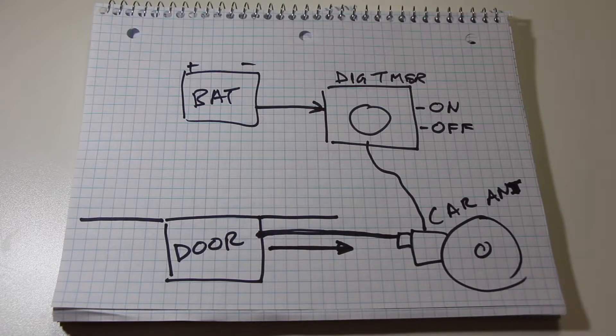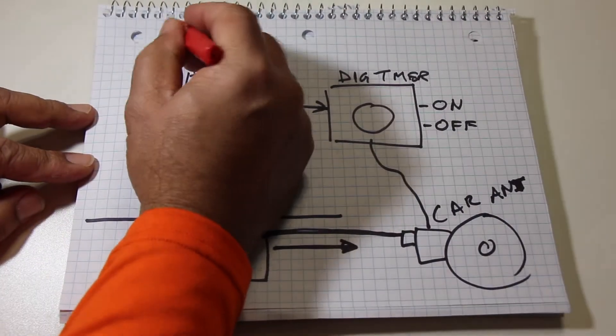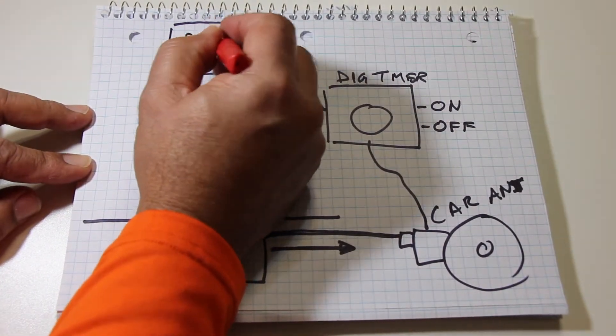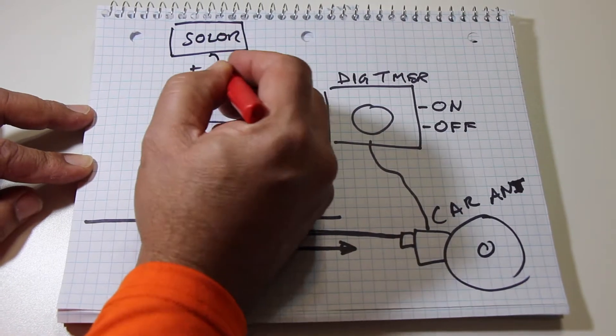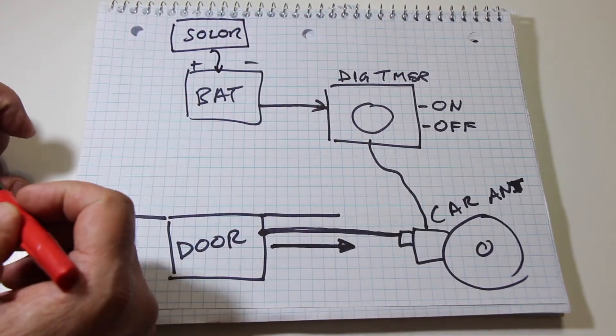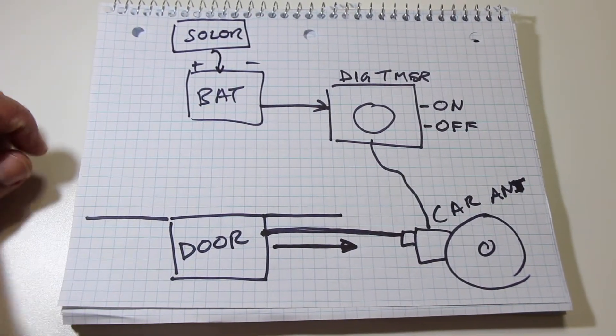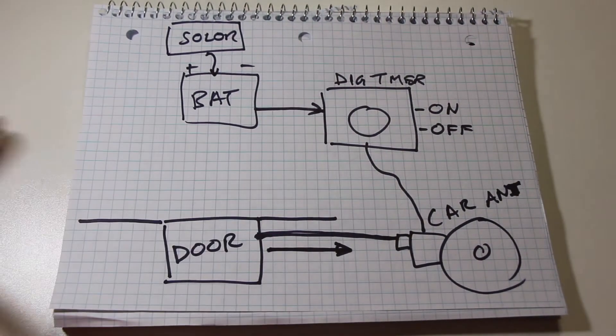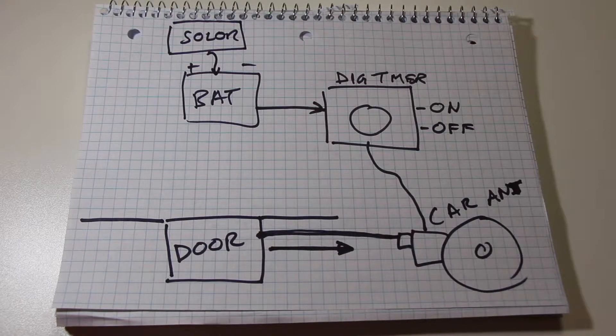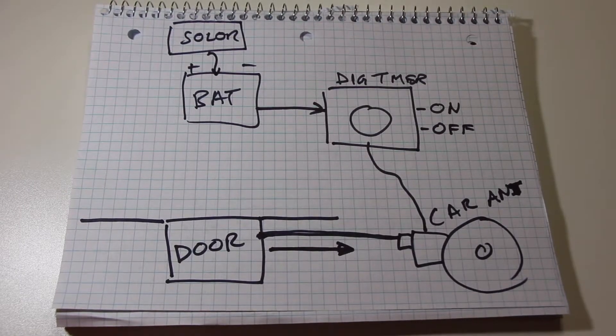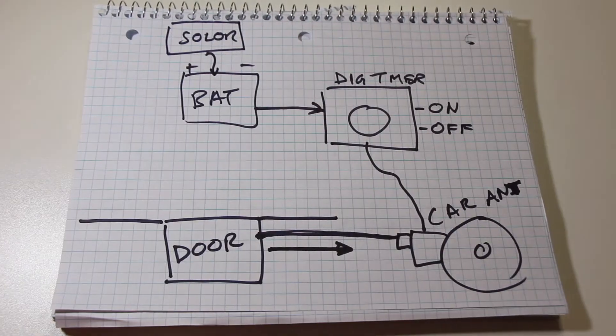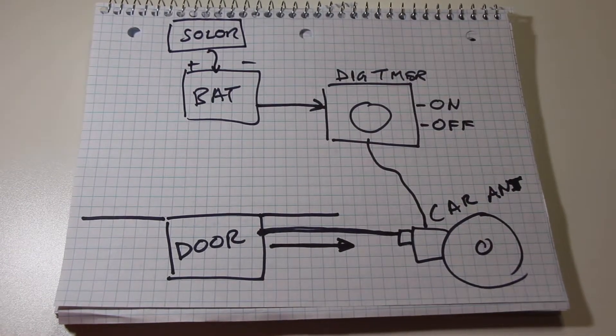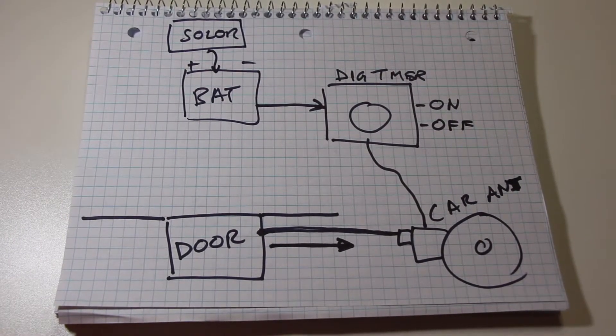So in order to charge the battery, we're thinking we're going to get a solar panel. The solar panel will be connected to the battery and it will be a trickle charge throughout the day and night, charging the battery. The battery should have enough power to give to the digital timer so the timer can send signals to the antenna to open and close.